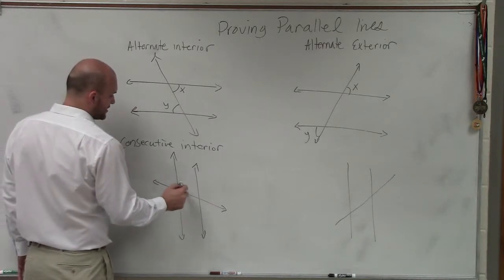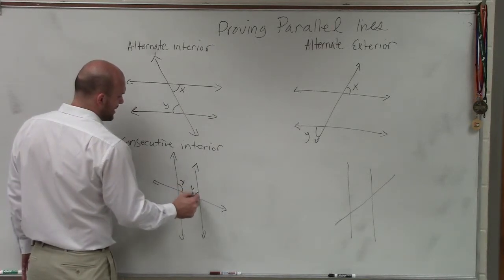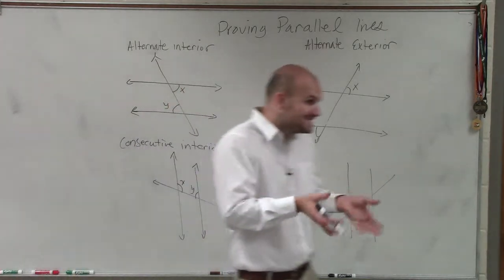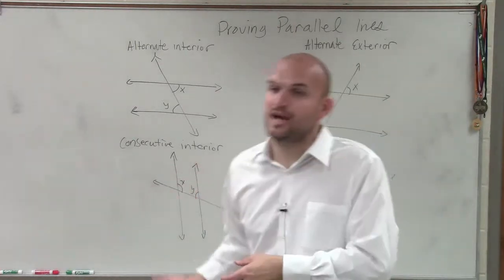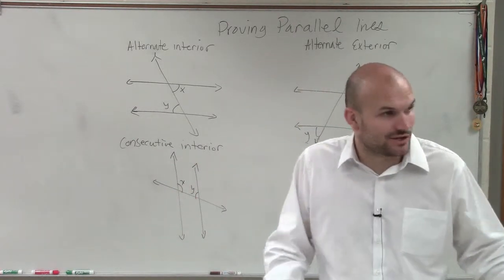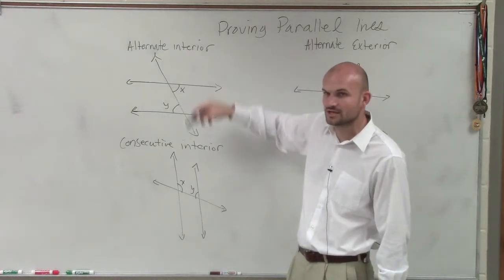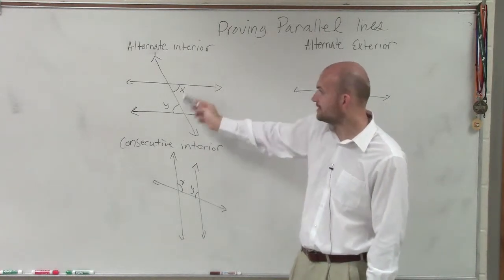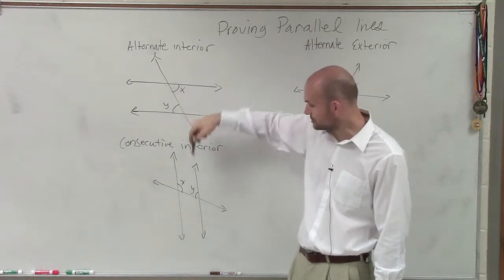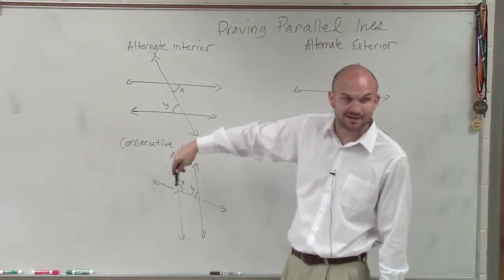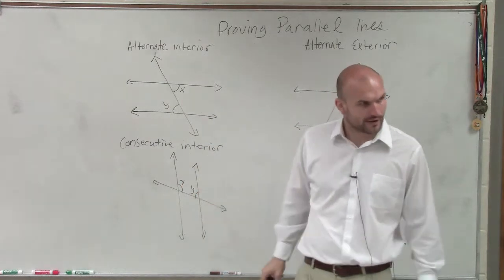Consecutive interior is when you have two angles that are interior, but they're consecutive - one right after another, right next to each other. Do you see how consecutive interior and alternate interior differ? Here, they're on opposite sides of the transversal. Here, they're on the same side. These are interior, these are interior.